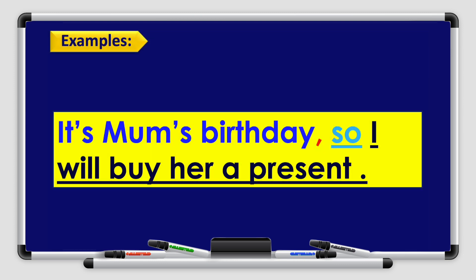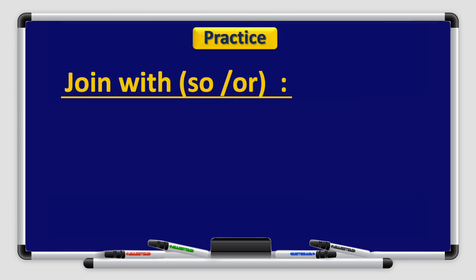Another example: It's mom's birthday, so I will buy her a present. Why are you going to buy a present for your mom? Because it's mom's birthday. It's mom's birthday, so I will buy her a present. Can you use the conjunction 'so' in examples like these? Sure you can. Now let's have some practice together — join the sentences with the conjunctions 'so' or 'or'.